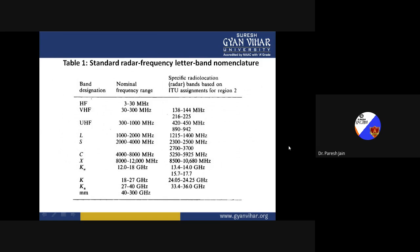K band stands from 18 to 27 GHz, and the specific ITU radio-location radar band for K band is 24.05 to 24.25 GHz. Ka band stands from 27 to 40 GHz.